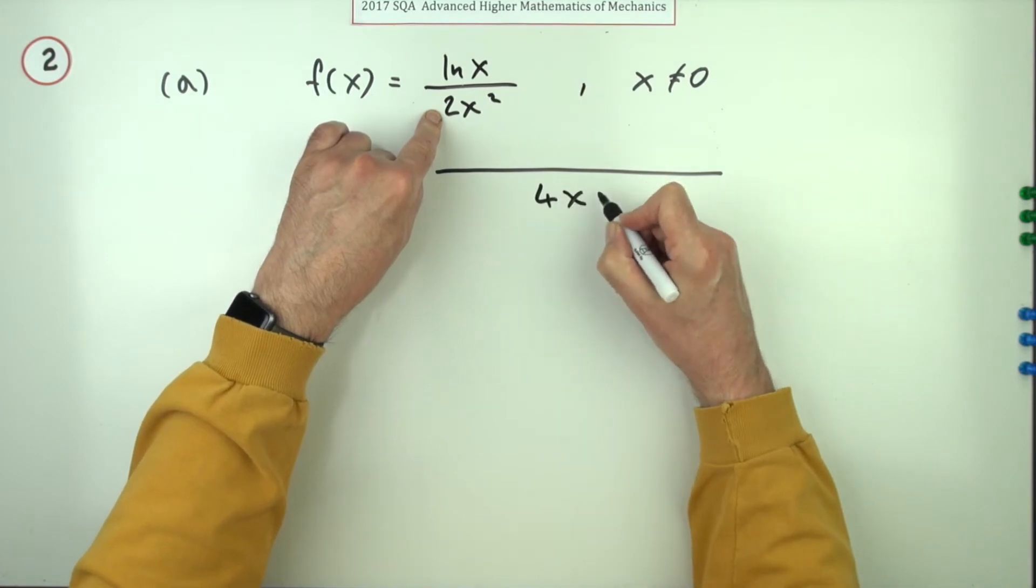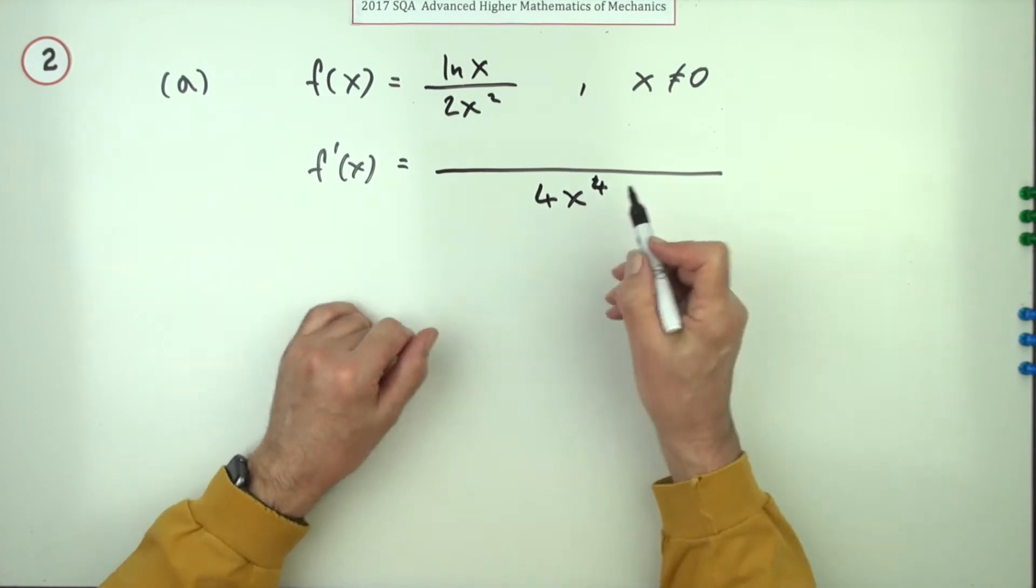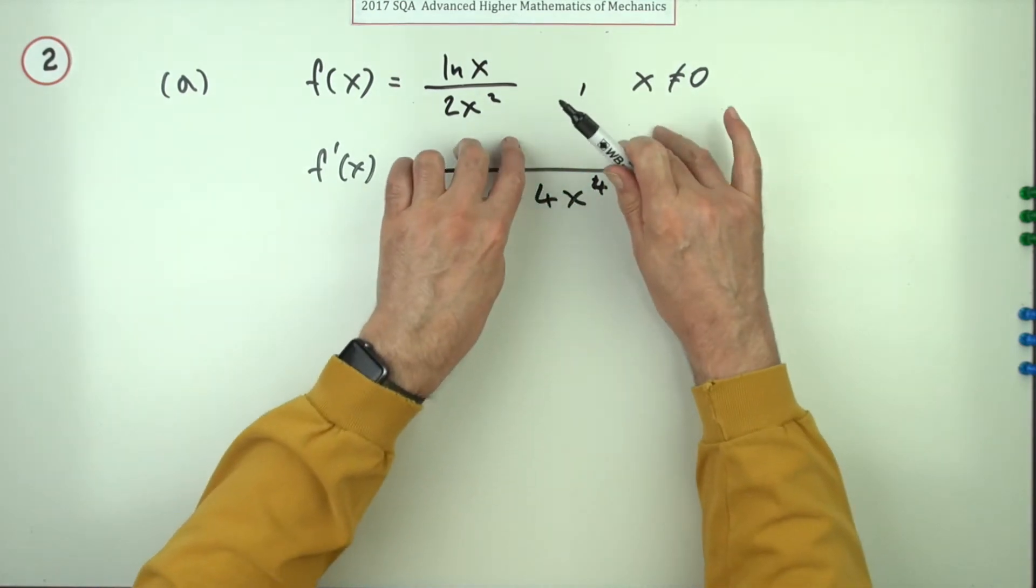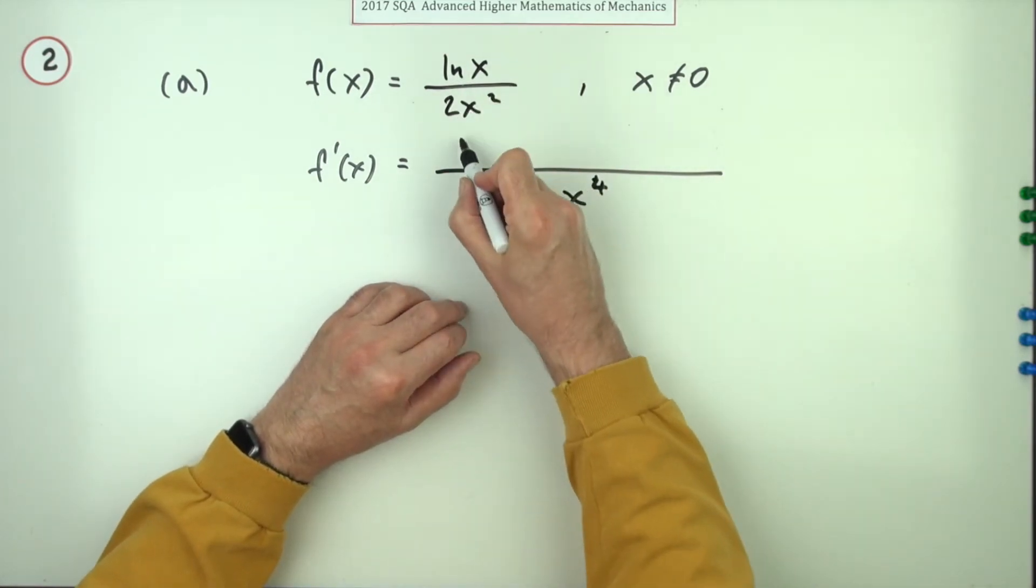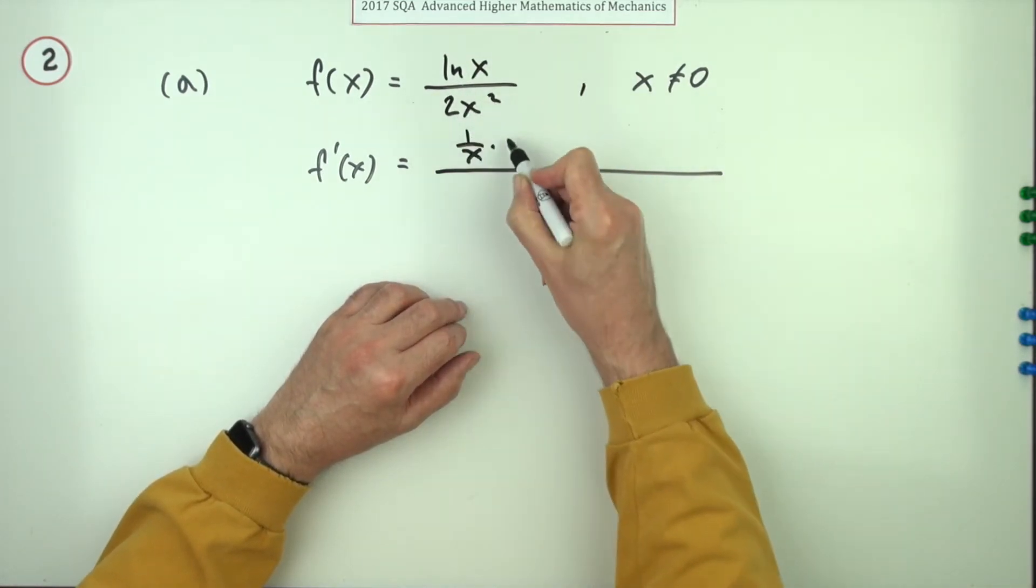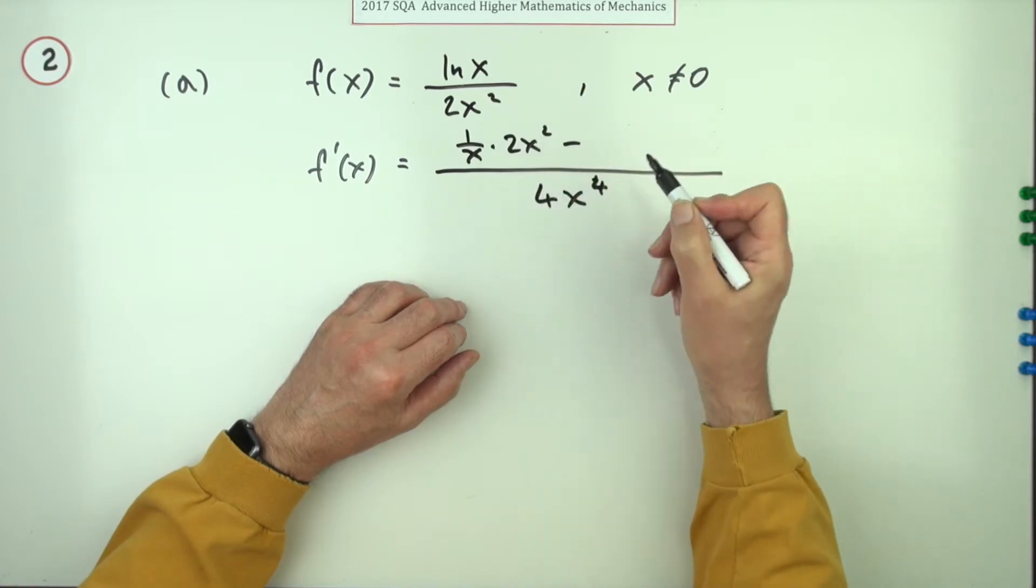And the pattern is square the denominator, so that's 2x squared times 2x squared, 4x to the power 4. Then just like the product rule's got the two parts where each of them takes their turn, it's obviously the same thing. So differentiate that, that's 1 over x, leave that alone that's 2x squared, minus because after all it was underneath, leave that alone and then differentiate that, 4x.